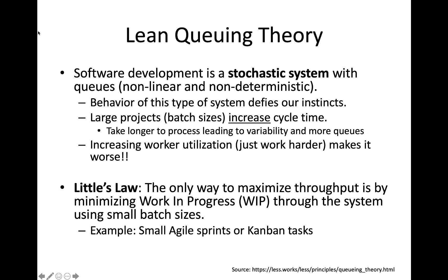It turns out that the software development process really aligns well with this system utilization thinking, because software development is very much a creative process. From a mathematical perspective, we consider it to be what's called a stochastic system with queues. This means it's a system that, if we were to model it, is nonlinear and non-deterministic — meaning there's an awful lot of randomness that occurs within a software organization, and we don't have really good visibility into how work is actually progressing locally through the system.